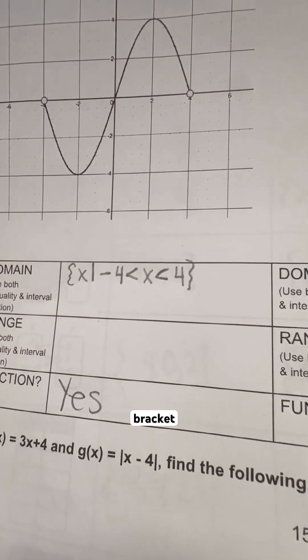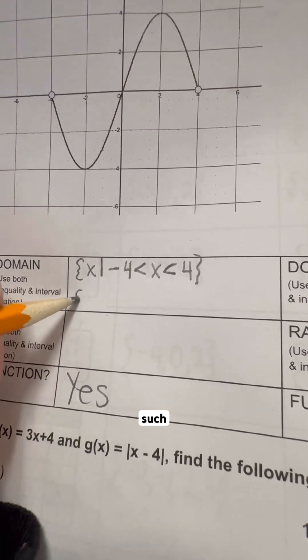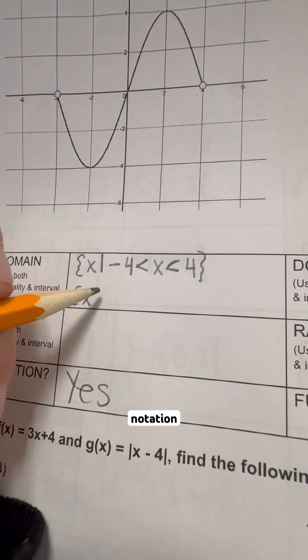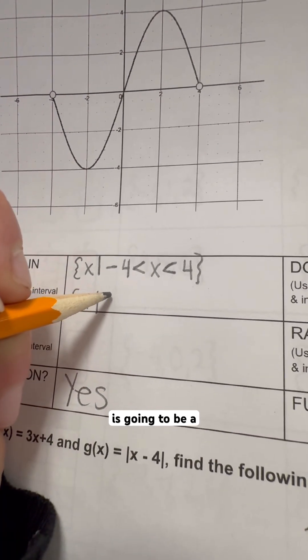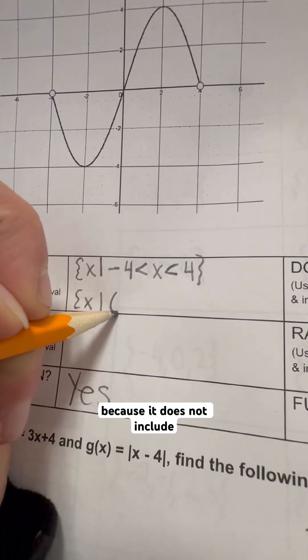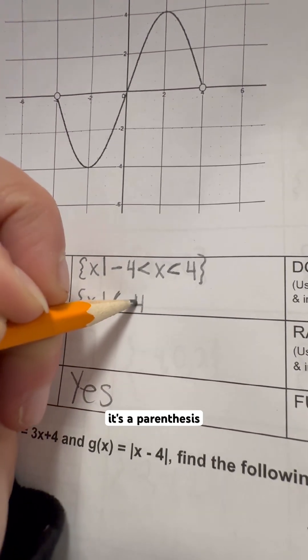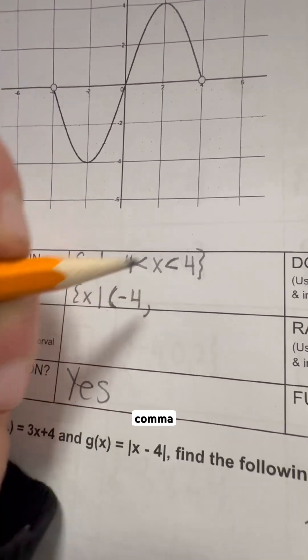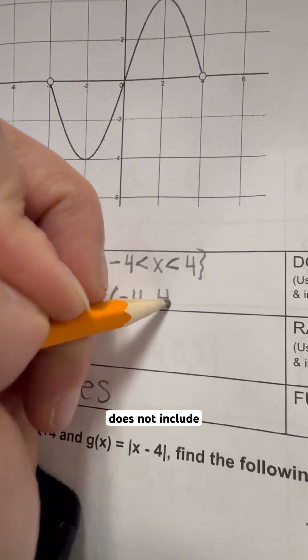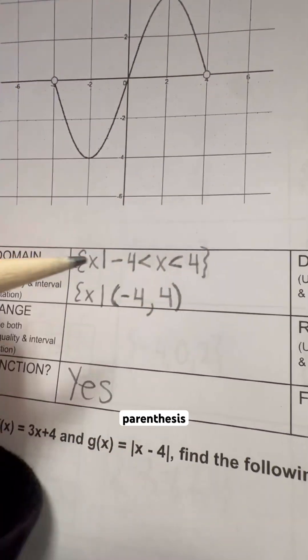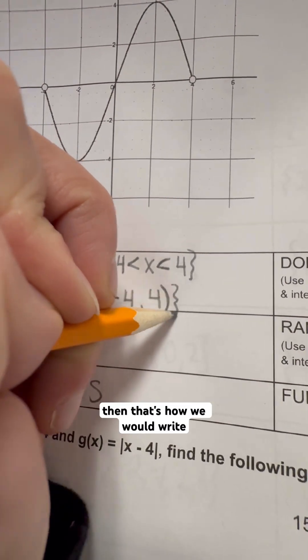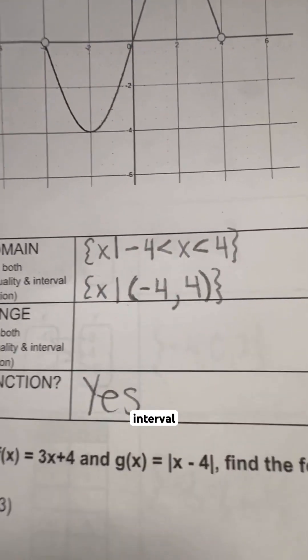Close it with a curly bracket, and then we will write x such that in interval notation. This is going to be a parenthesis because it does not include that negative four. Anytime it does not include the number, it's a parenthesis. Comma, the number that it stops at also does not include that, so it is a parenthesis after it as well. And that's how we would write our interval notation.